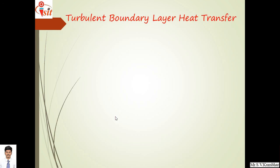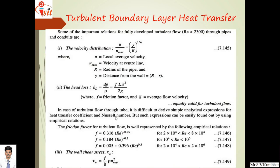Now, turbulent boundary layer heat transfer. Some important relations for fully developed turbulent flow — Reynolds number greater than 2300 — through pipe and conduit are: velocity distribution u upon U_max equals (y upon R) raised to 1/N, where u is local velocity, U_max is velocity at centreline, R is the radius of pipe, and y is the distance from wall given by capital R minus small r. The head loss is HL equals dp upon rho equals F L U squared upon 2g, where F is the friction factor and U_bar is the average velocity.